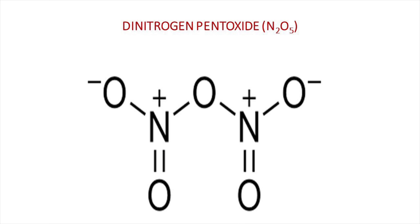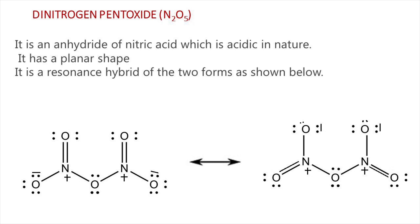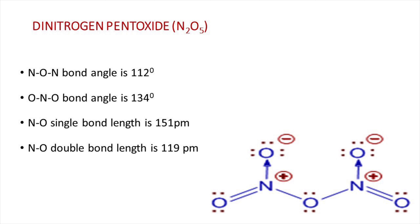Another nitrogen oxide is dinitrogen pentoxide, with the chemical formula N2O5. It is an anhydride of nitric acid and is acidic in nature. It has a planar structure and is a resonance hybrid of two forms. In the molecule, the nitrogen-oxygen-nitrogen bond angle is 112 degrees, the oxygen-nitrogen-oxygen bond angle is 134 degrees, the nitrogen-oxygen single bond length is 151 picometers, and the nitrogen-oxygen double bond length is 119 picometers.